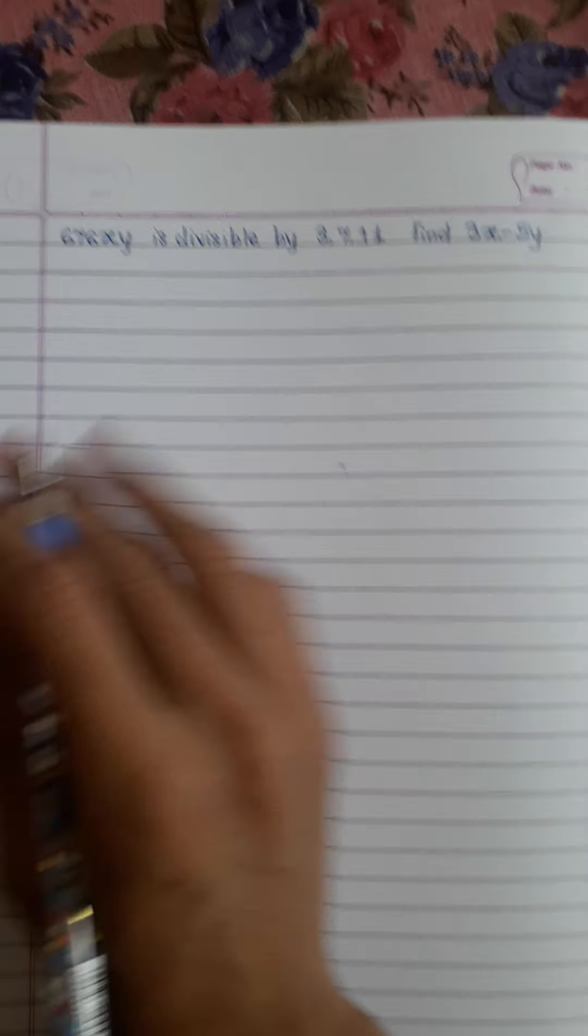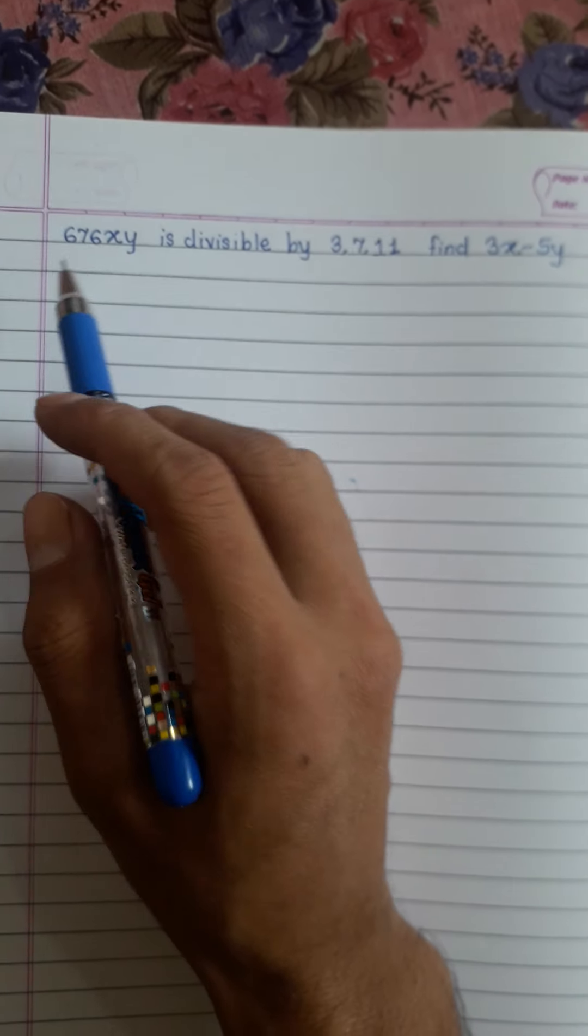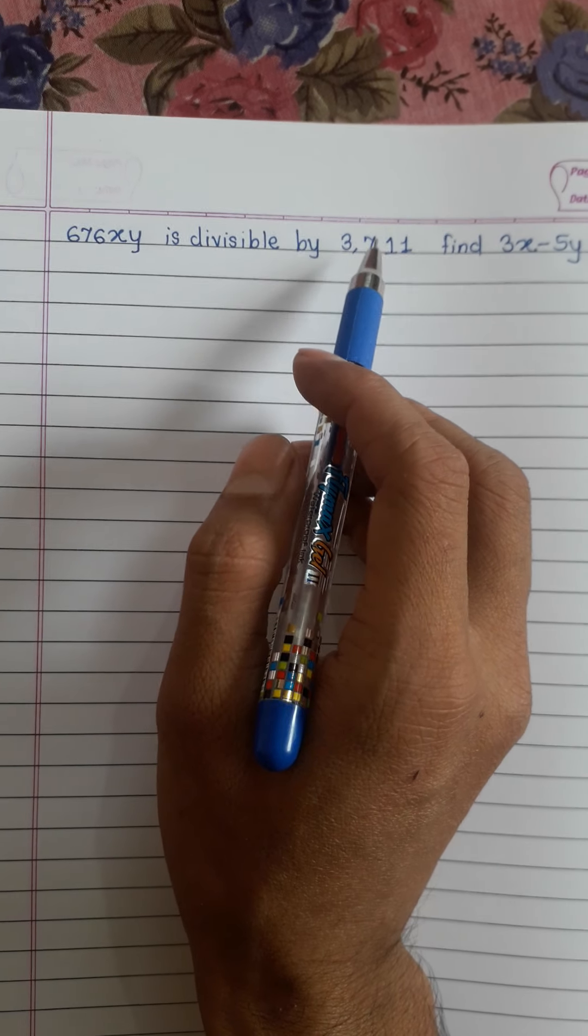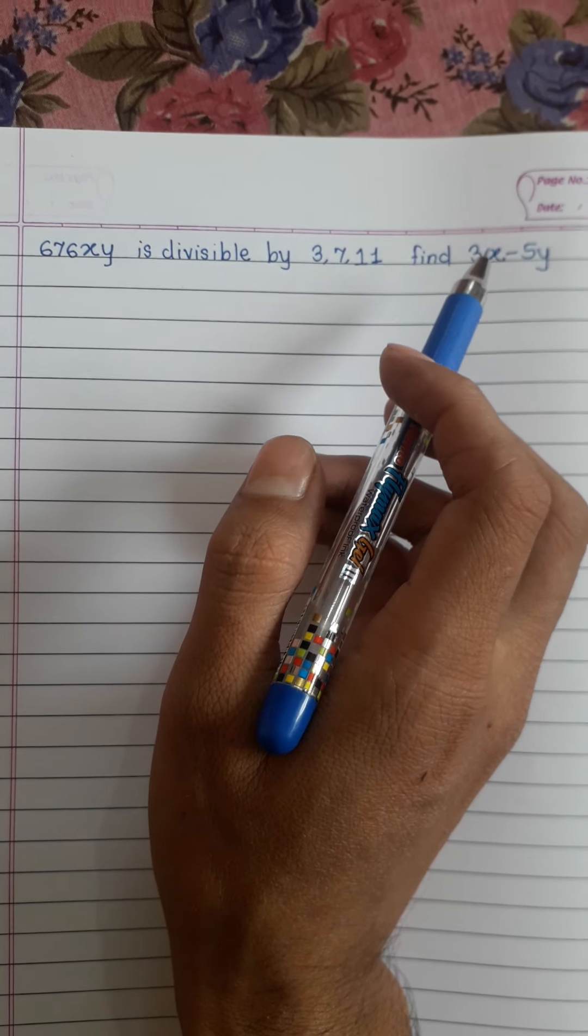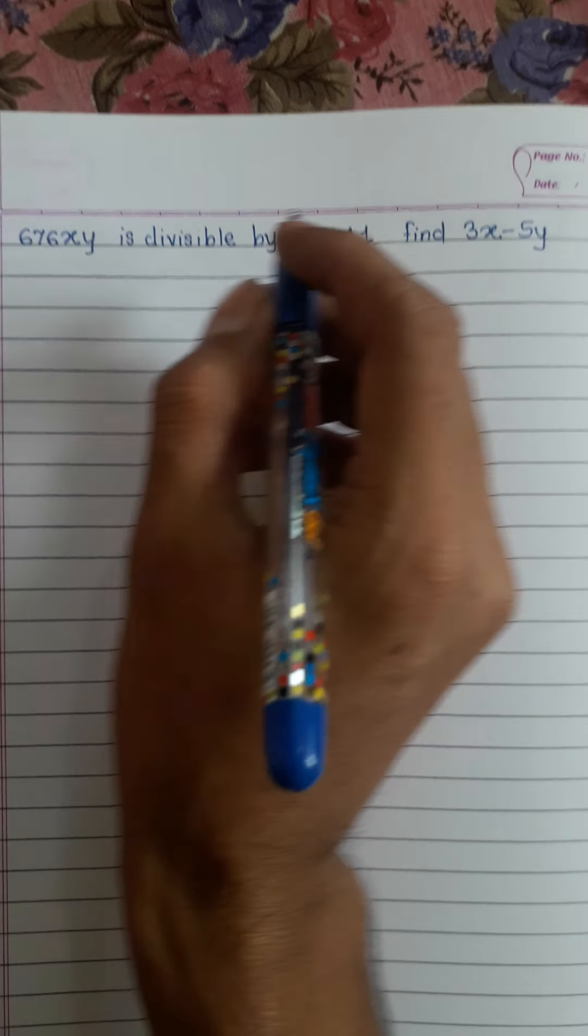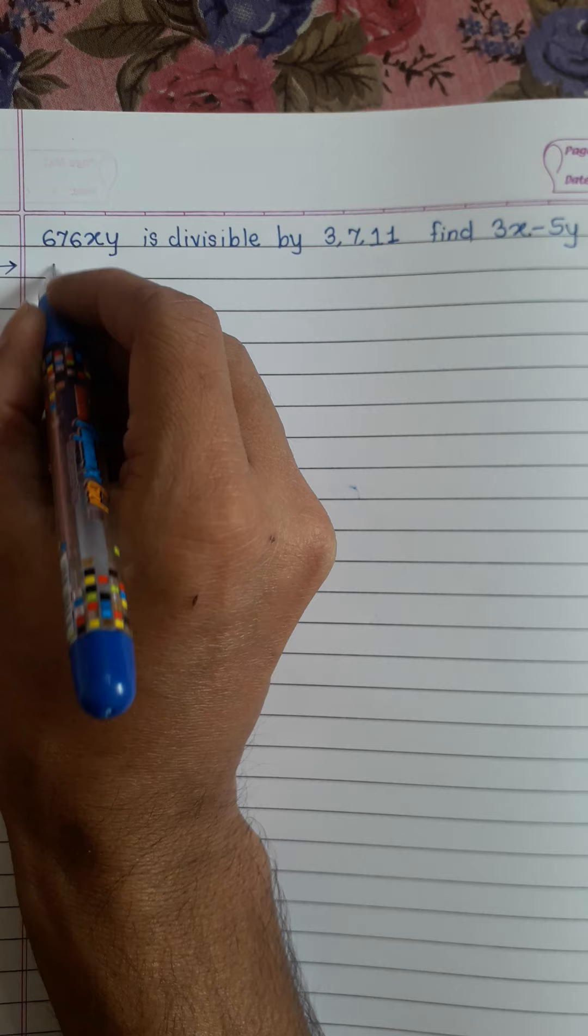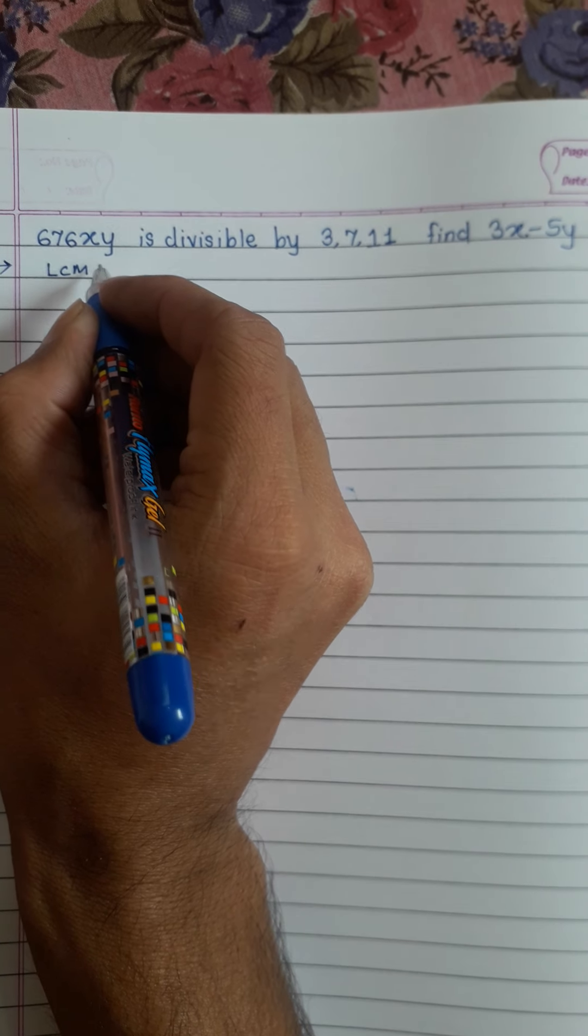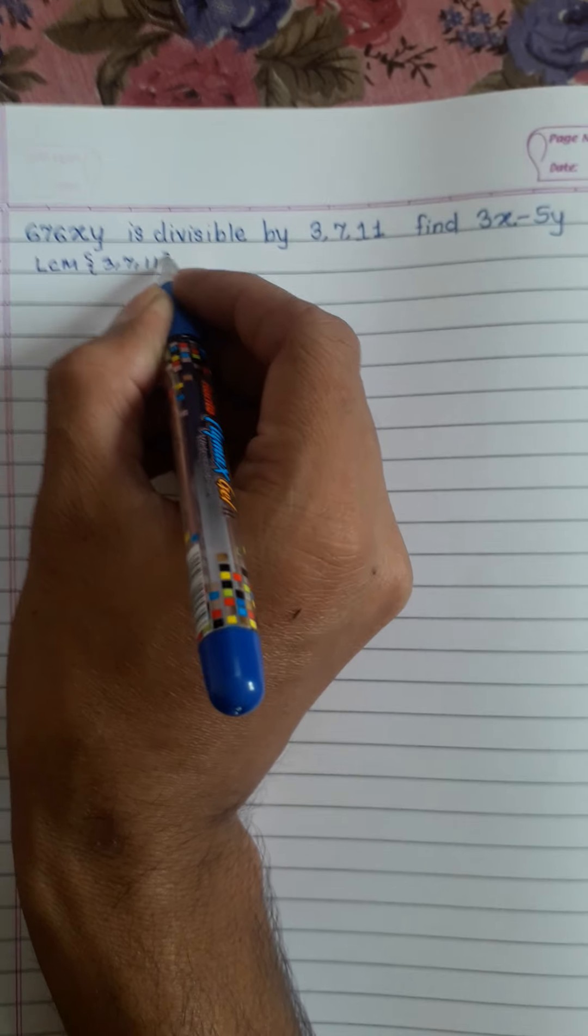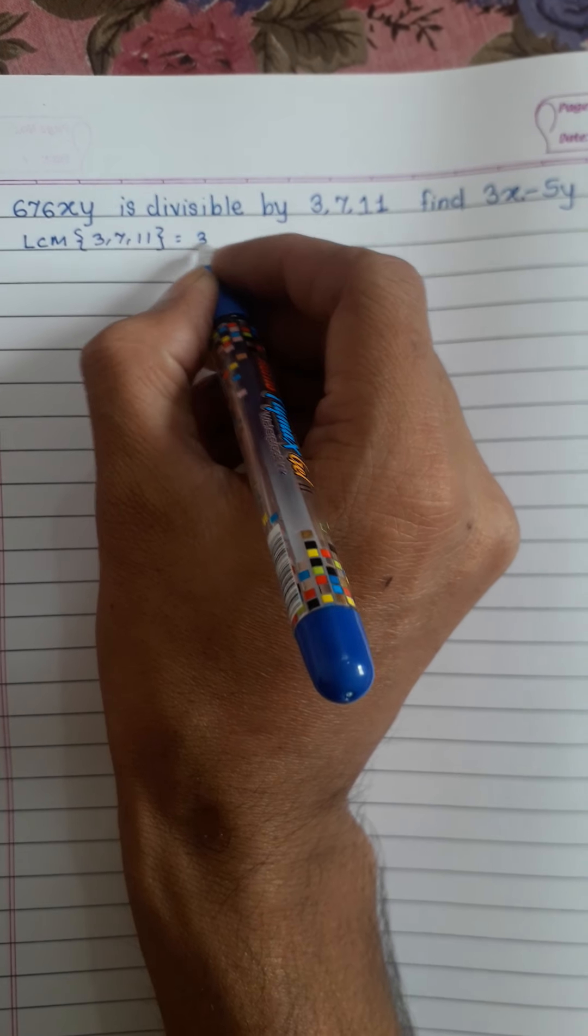Welcome friends, today we will solve this question: 6 7 6 XY is divisible by 3, 7, 11. Find 3X minus 5Y. First of all, we will find the LCM. LCM of 3, 7, 11 is 3